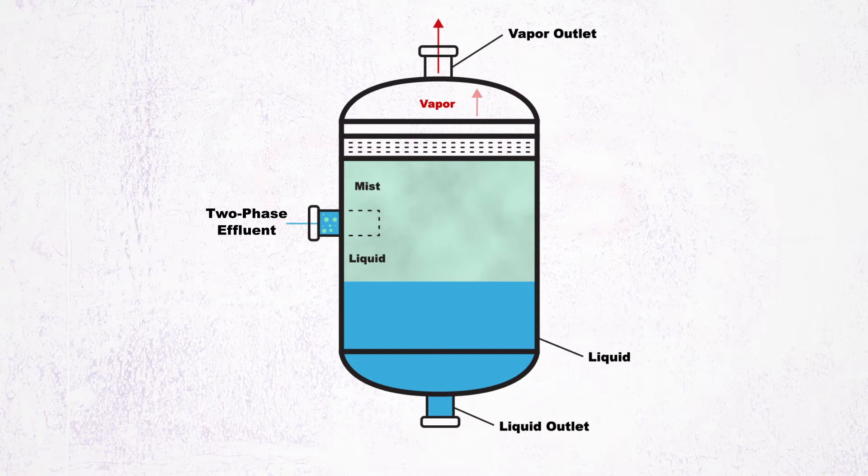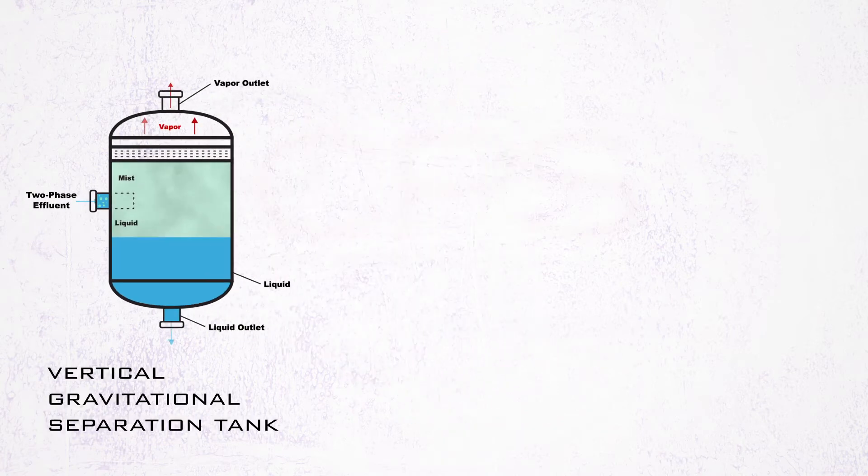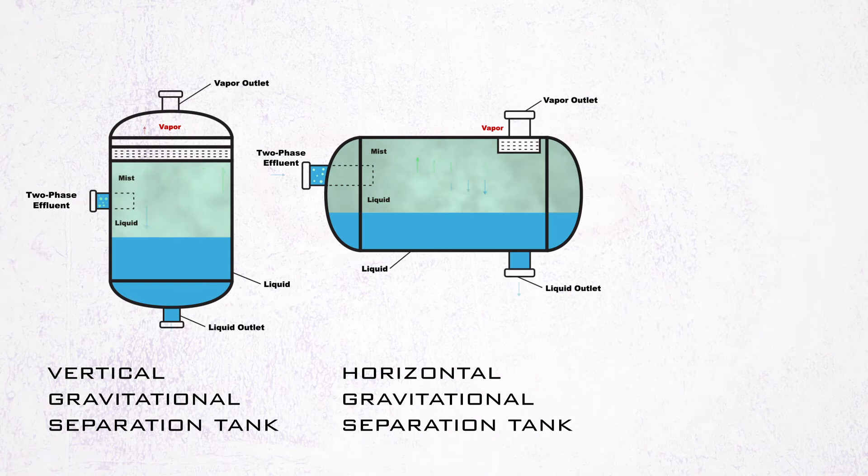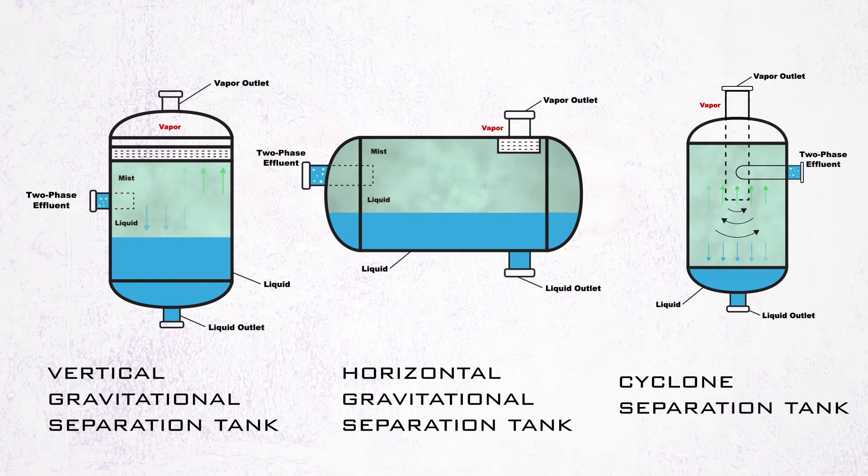Three types commonly used in the industry are the vertical gravitational separation tank, the horizontal gravitational separation tank, and the cyclone separation tank.